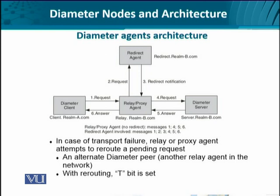When redirection is required, the path or route is determined by the redirect agent. The redirect agent does not route itself, but only provides information on which agent — relay or proxy — the information has to be forwarded to. In that case, you follow the sequence of steps one through six. Additionally, if a Diameter message transport fails, an alternate Diameter peer — another relay agent — is utilized. Since this is a failover activity, the rerouting is done with the T-bit set, indicating this message is being delivered on an alternate path. This keeps network administrators fully aware of what is happening in their network.